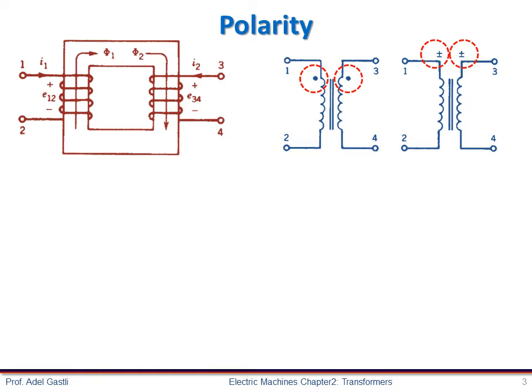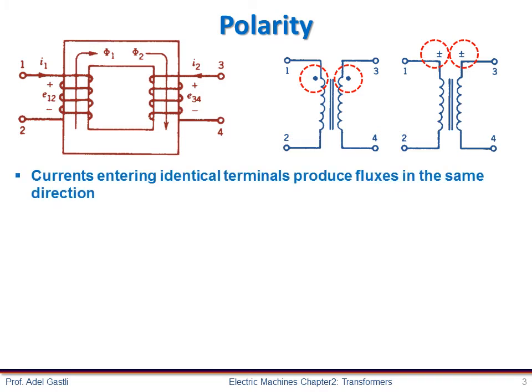Both leads behave like a continuous circuit — one current entering into the first lead and another current leaving the second lead. So currents entering identical terminals produce fluxes in the same direction. Thus, the EMF e12 on the primary and EMF e34 on the secondary are in phase.